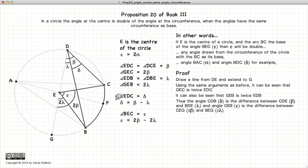So we have that delta is equal to beta minus lambda. We have that epsilon is equal to 2 beta minus 2 lambda. Or in other words, epsilon is equal to 2 delta. Or this angle is twice that angle.